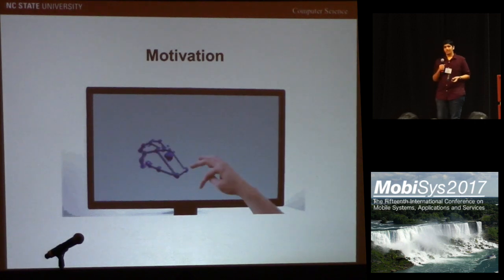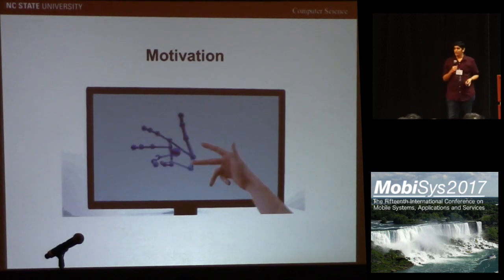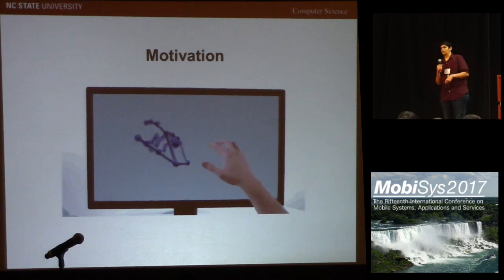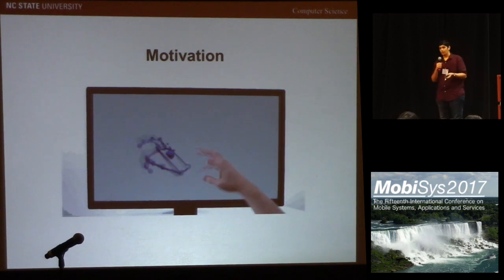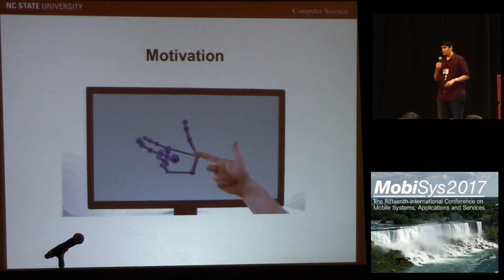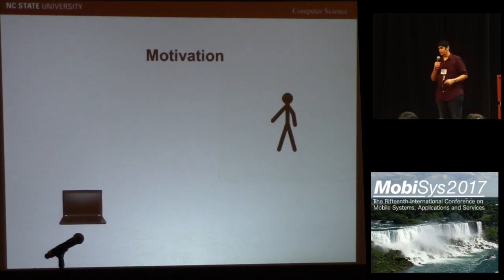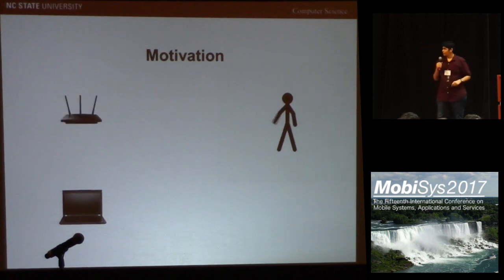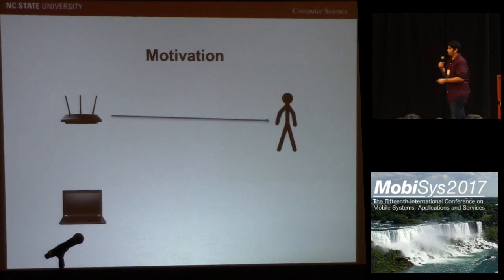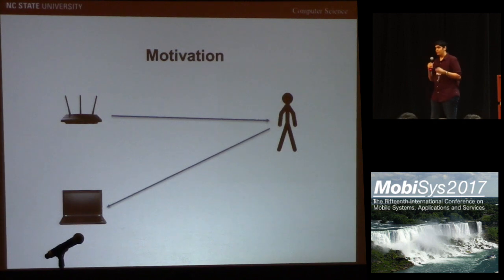Researchers are trying to explore various modalities that can be used for interaction and are not required to be interdisciplinary devices. Wi-Fi is one such modality, which offers a very easy to deploy and low-cost setup requiring just two devices: a laptop which can act as a receiver, and a router. The signal coming from the router to the receiver gets affected because of the user's motion, and these variations perceived by the laptop can be used to recognize what the user is doing.